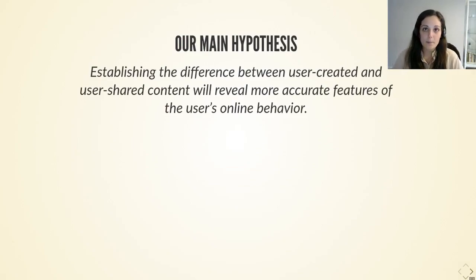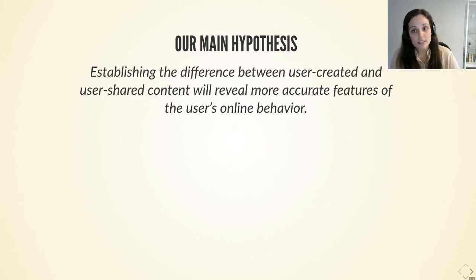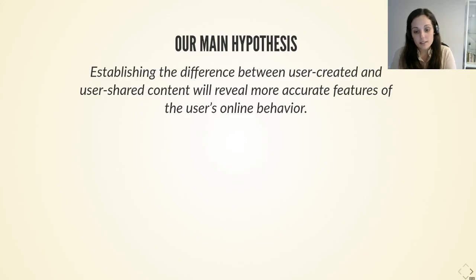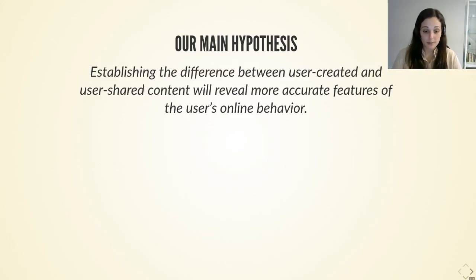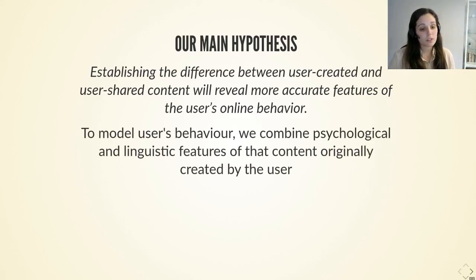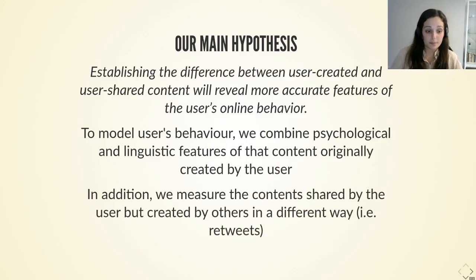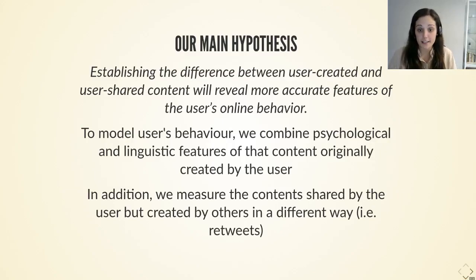In order to understand the decisions that we took in the design of our model, it is important that we understand our main hypothesis, which aims to differentiate between the content created by the user and then shared in the network, and the content shared by the user but not created by himself or herself — like, for instance, tweets. So what we tried to do here was to model users' personality and linguistic features by measuring their original tweets, and then other features of the user behavior were taken from other kinds of contents, like retweets.